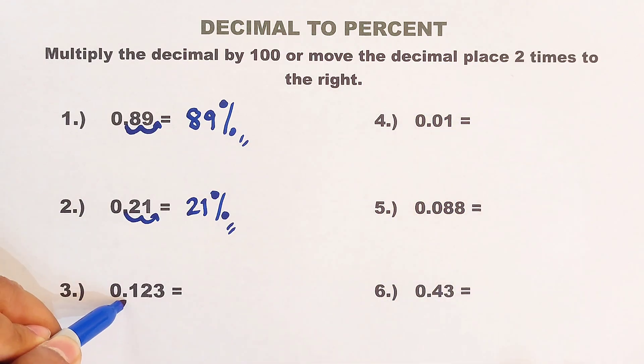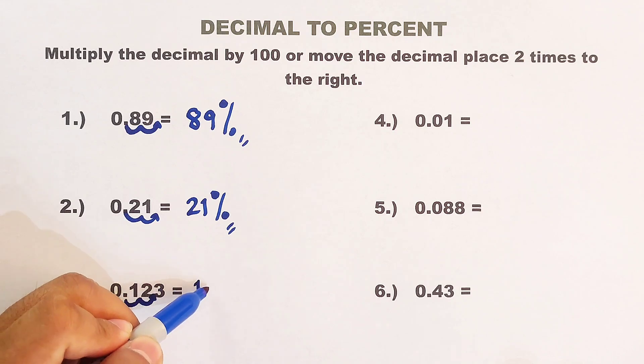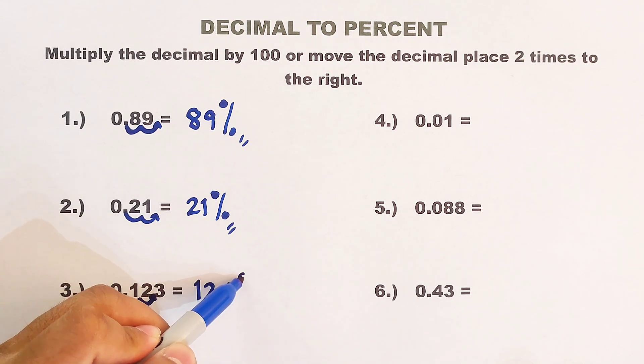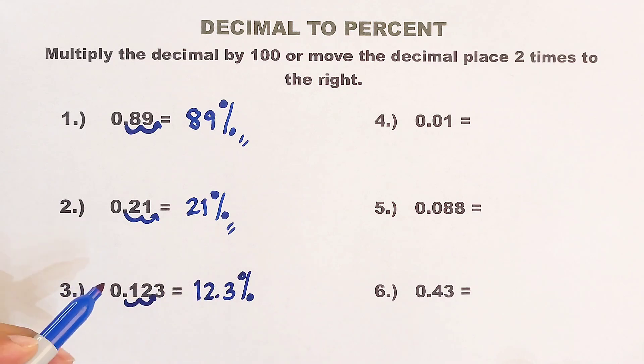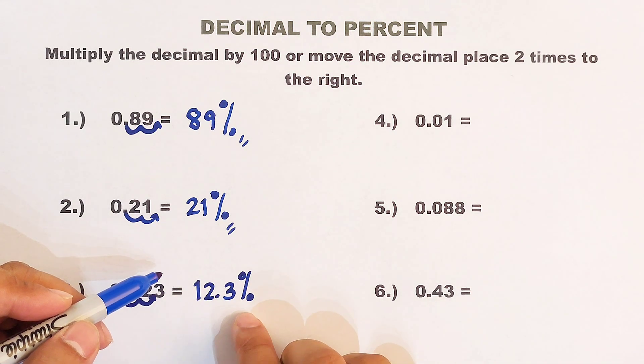So from this point, 1 and 2. And it will stop here. That is 12.3. And then we will put the percent sign. Meaning 0.123 is equivalent to 12.3%.